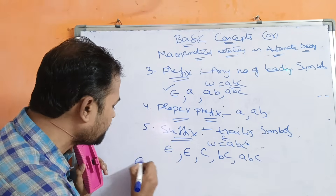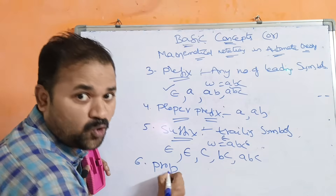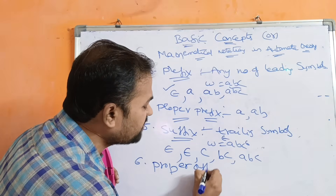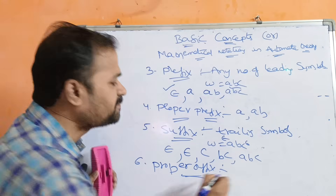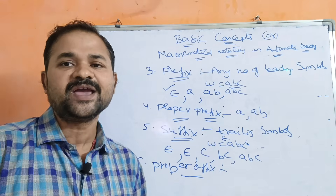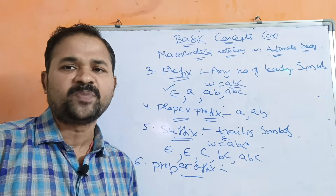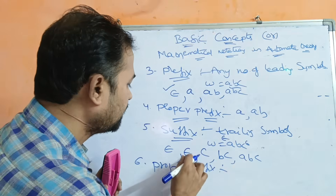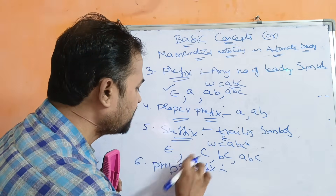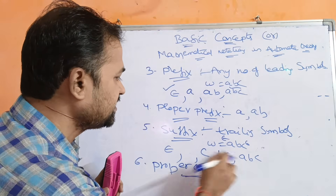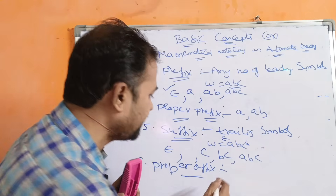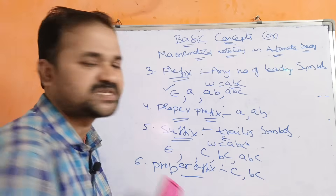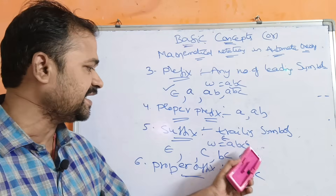Now let us see the proper suffix of a string. A proper suffix means all suffixes except epsilon and the complete string. So for the string ABC, the proper suffixes are C and BC — we cannot include epsilon or the complete string ABC.